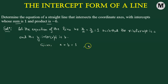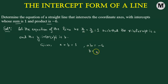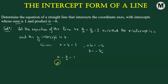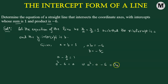We also have another condition: the product of the intercepts A times B equals negative six. Using these two equations, let's find the values of A and B. We replace B with negative six over A in the first equation A plus B equals one, giving us A minus six over A equals one. That gives us A squared minus six equals A, so A squared minus A minus six equals zero.